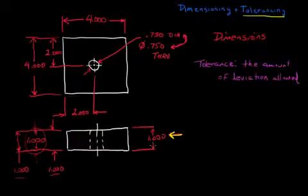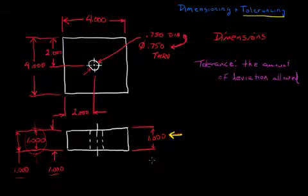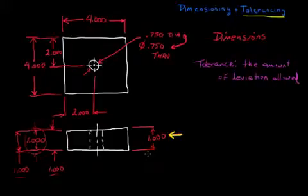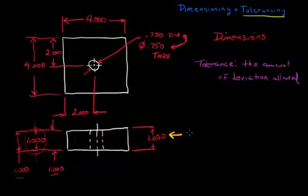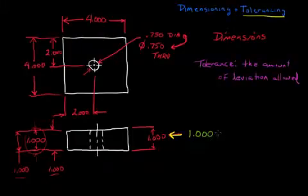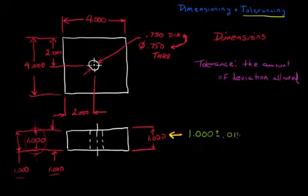Tolerance is the amount of deviation that we are allowed. So in this case, let's say the engineer or the draftsman has determined that he wants one inch thick material, but he's determined that if the material were ten thousandths of an inch less than one inch, or ten thousandths of an inch more than one inch, that would suit his function quite fine. We're going to put our dimensions with tolerances in green. His thickness, he would indicate one inch, as he did before, and then plus or minus .010.